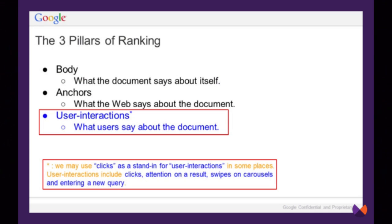Let's talk about this presentation called Life of a Click. This is a slide from the DOJ versus Google trial. I've added the red boxes here. It says that there are three pillars to ranking: the document itself, the anchors — links are labels on the web that help Google understand what's connected to what and how we label things, and anchors in links are very important — but what we're most interested in is the third item: user interactions.